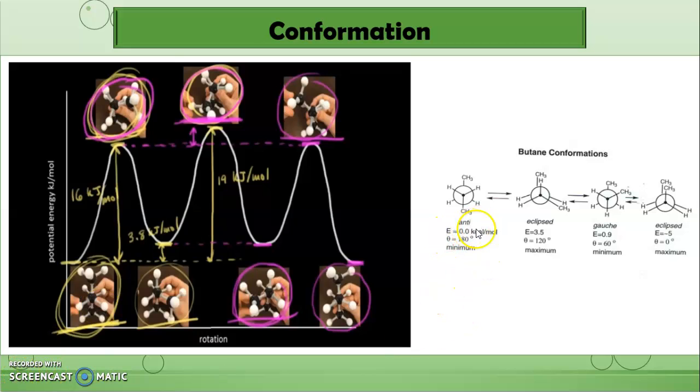What is the difference between anti, eclipse, and gauche? The anti is the most stable. Anti also known as trans, it is the most stable conformation, where the conformations are as far as possible. Look at the conformation of hydrogen, the position of hydrogen. The hydrogen positions are far from each other. So anti or trans, there are 180 degrees apart from each other.